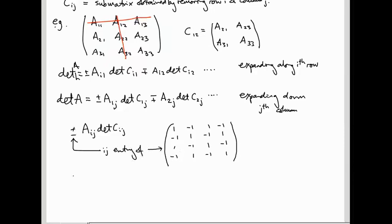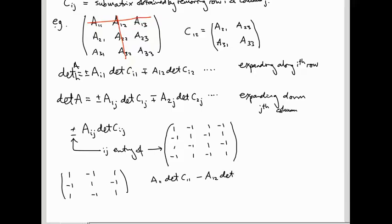Let's check that for 3x3 matrices this makes sense. For 3x3 matrices this is our sign matrix. So we get A11·det(C11) because the (1,1) entry is plus, then minus A12·det(C12) because there's a minus sign, then plus A13·det(C13) because there's a plus 1. Rather than justify all the sign details, I'm just going to work through some examples.